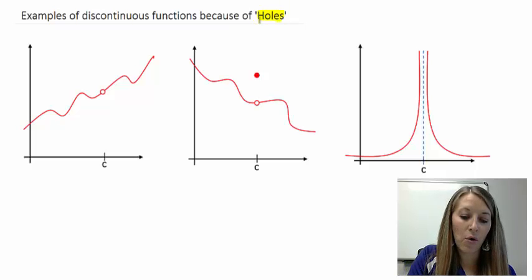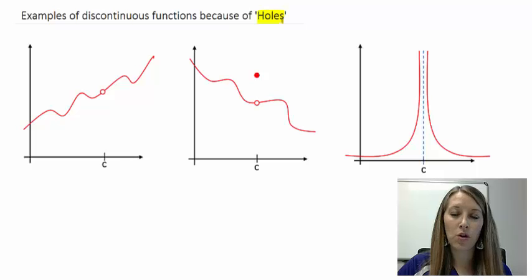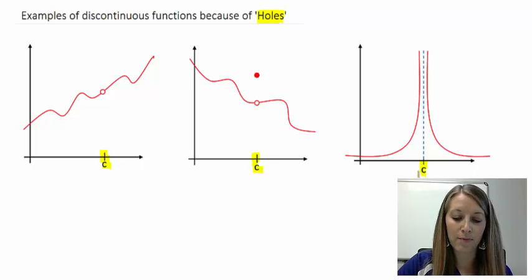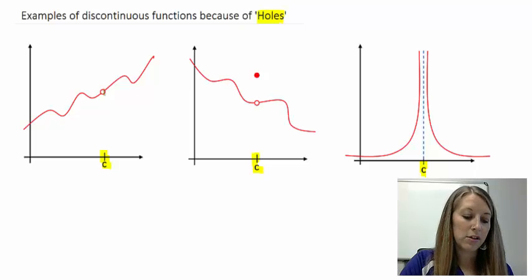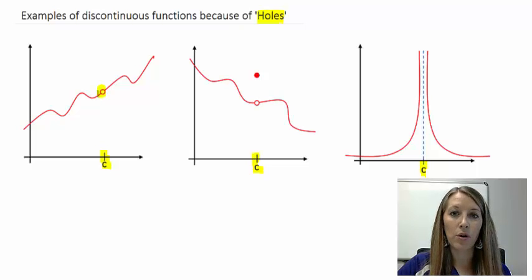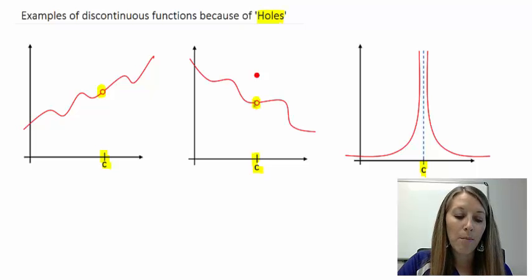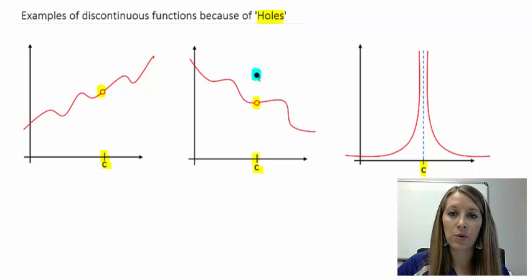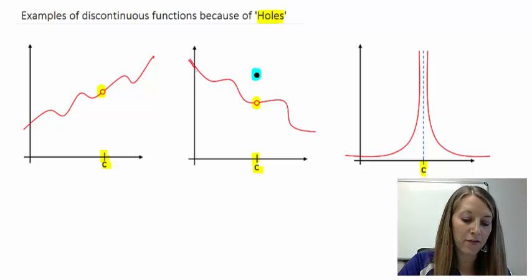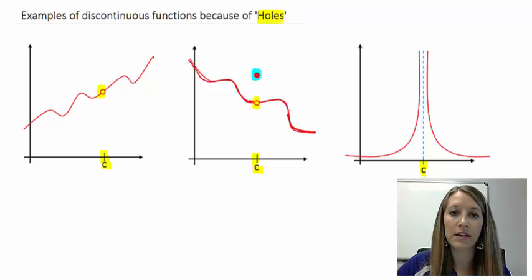Starting with examples of holes in the graph — in each of these three graphs, there's a place where the graph is discontinuous at C. In the first example, there's clearly a hole in the graph at that point, which makes the graph discontinuous there. In the second example, I still see the hole, but the graph is actually defined at a whole other point. That does not affect whether the graph is continuous or discontinuous — if I still have to pick up my writing utensil to plot that point or move on, that is where the graph is discontinuous.